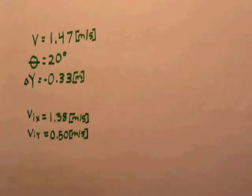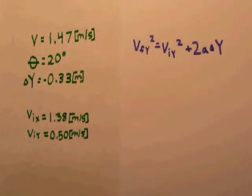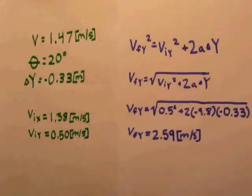Because the x velocity remains constant, we only need to find the velocity in the y direction. To begin, we will use the equation vf squared equals vi squared plus 2a delta y. We will manipulate the formula, then plug in the numbers and solve. The final y velocity is 2.59 meters per second.